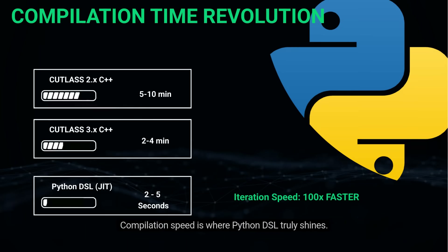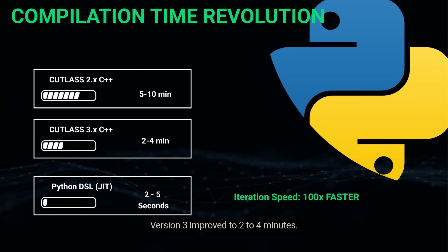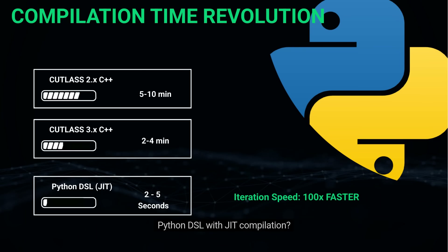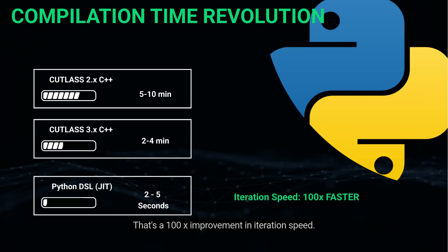Compilation speed is where Python DSL truly shines. Cutlass 2.x took 5 to 10 minutes to compile a single kernel. Version 3 improved to 2 to 4 minutes. Python DSL with JIT compilation: 2 to 5 seconds. That's a 100x improvement in iteration speed.